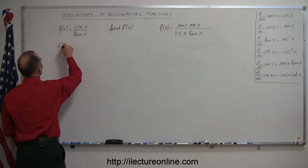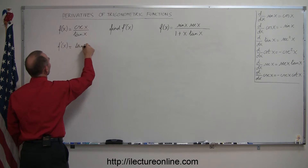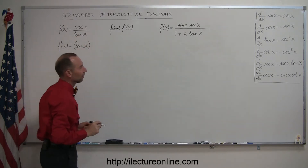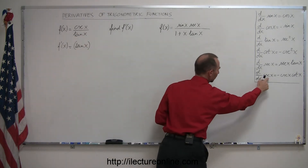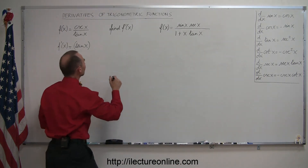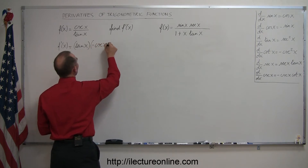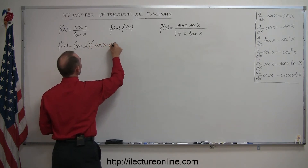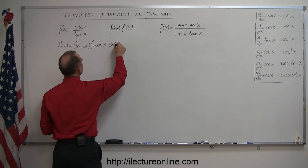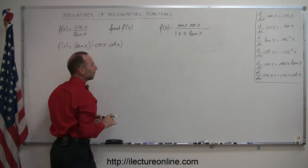f prime of x is equal to the denominator, tangent of x, times the derivative of the numerator, cosecant of x. The derivative of cosecant of x is minus cosecant of x times the cotangent of x. So now we have the denominator times the derivative of the numerator.